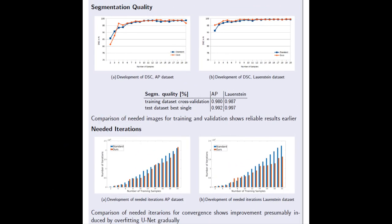Compared to standard U-Net, our implementation needed less images in training and validation for reliable results. Our segmentation quality increases faster and is stable on a higher level.